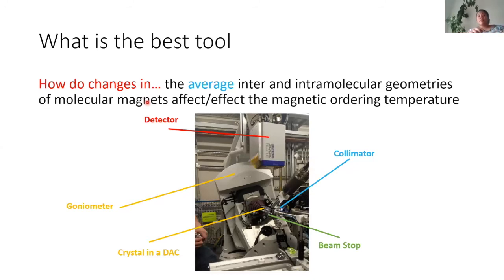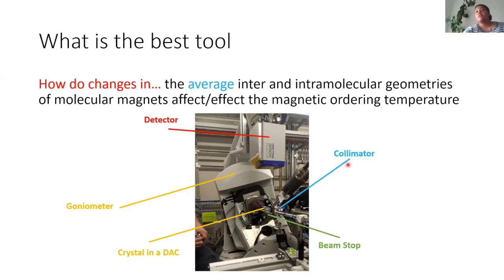At Diamond, specifically on I-19, a high pressure collection takes 14 minutes - almost the same amount of time to center the crystal and clear the experimental hutch as to take the actual measurement. The I-19 setup has a detector, a goniometer weighing about 70 kilos, and a much finer collimated beam. You can select the wavelength you're interested in and the beam is much brighter. Instead of a frame taking 5 to 60 seconds, it takes about 0.04 seconds per frame.